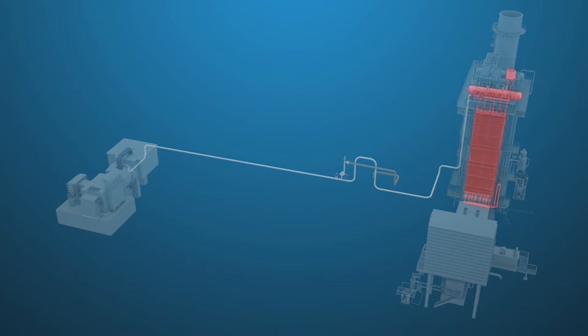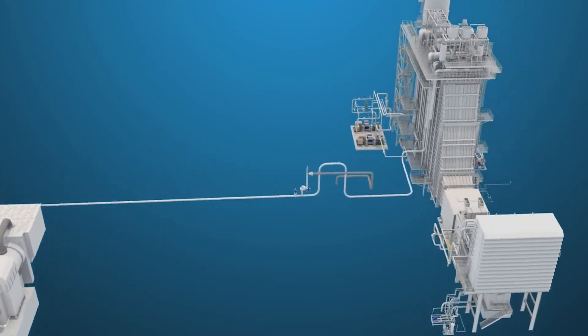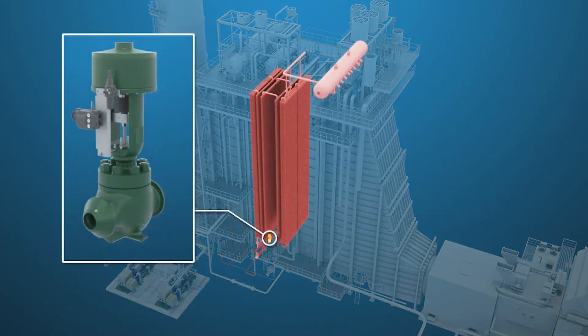Once adequate pressure and temperature are attained, the steam turbine will be placed in service. As the load on the steam turbine is increased, the feed water startup valve will continue to open to maintain level in the HP drum.